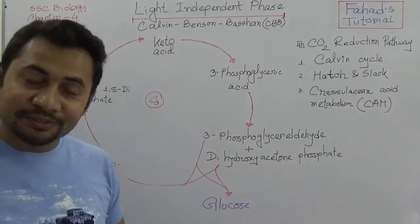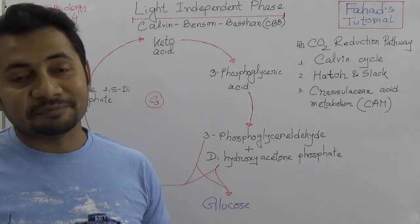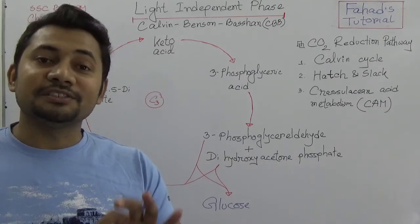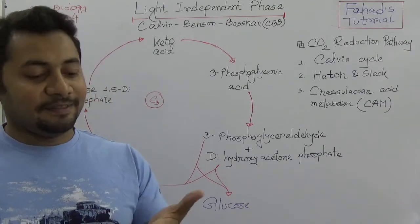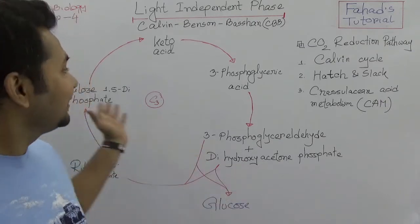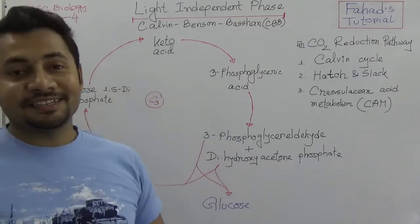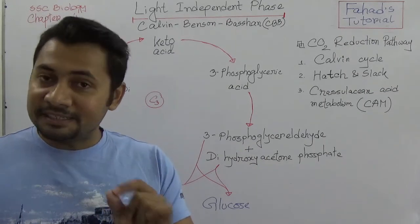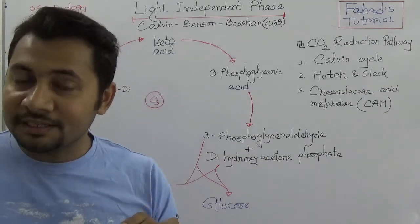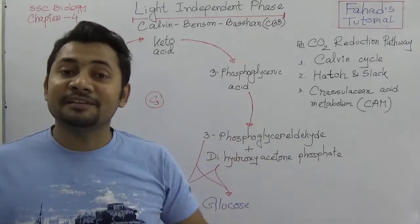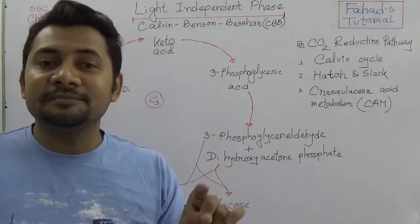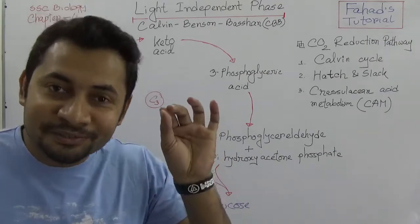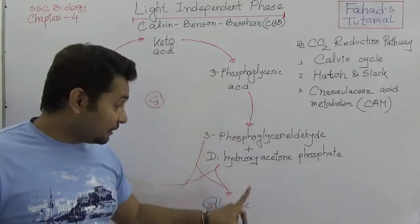Students of English version, this is very common on your question paper — especially at Cadet College. English version students, you have definitely seen questions about C3 cycle in your exams. In the light dependent phase, ATP and NADPH2 are produced, and these will be used here to produce glucose.